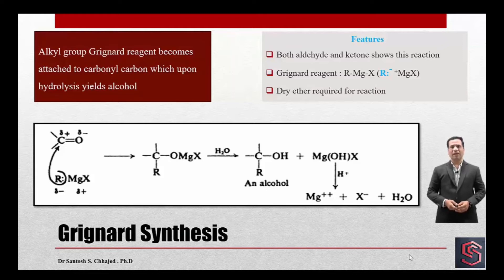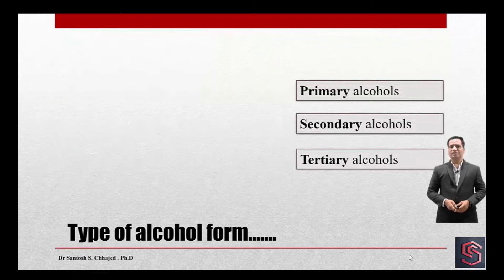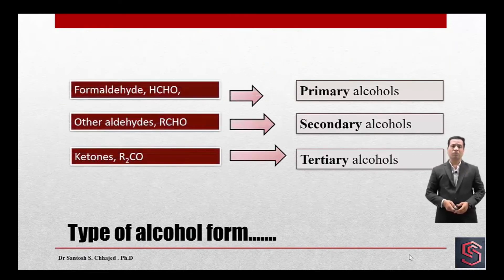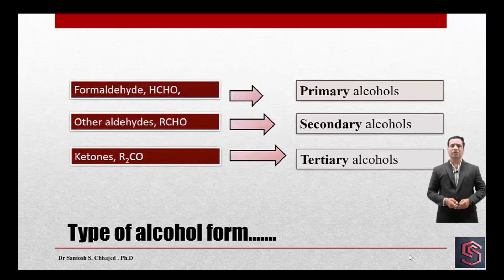And strictly, we do require dry ether as a solvent in this particular reaction. We can obtain primary, secondary, and tertiary alcohol by using Grignard synthesis depending upon what starting material we are using. So when we react formaldehyde with Grignard reagent, formation of a primary alcohol takes place.